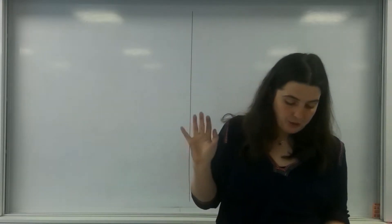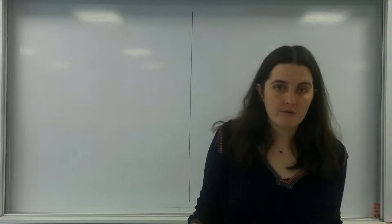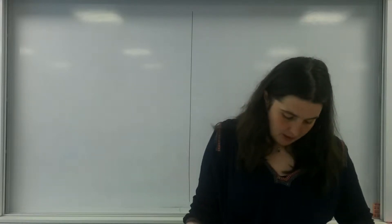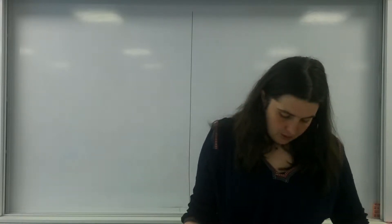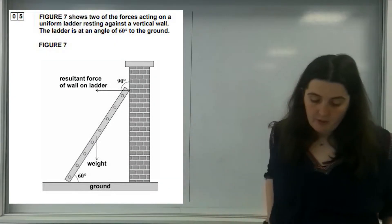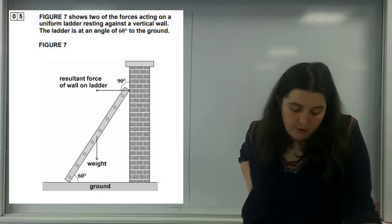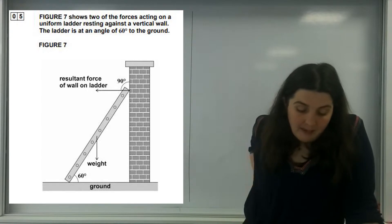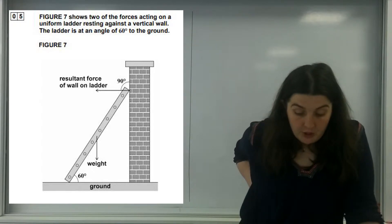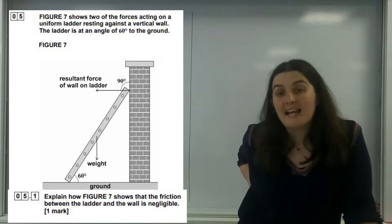Hello and welcome to TL Physics. Today I'm going to be doing question 5 from the 2017 paper 1 for the A-level physics. We have a diagram here of a ladder, and it says: explain how figure 7 shows that the friction between the ladder and the wall is negligible.